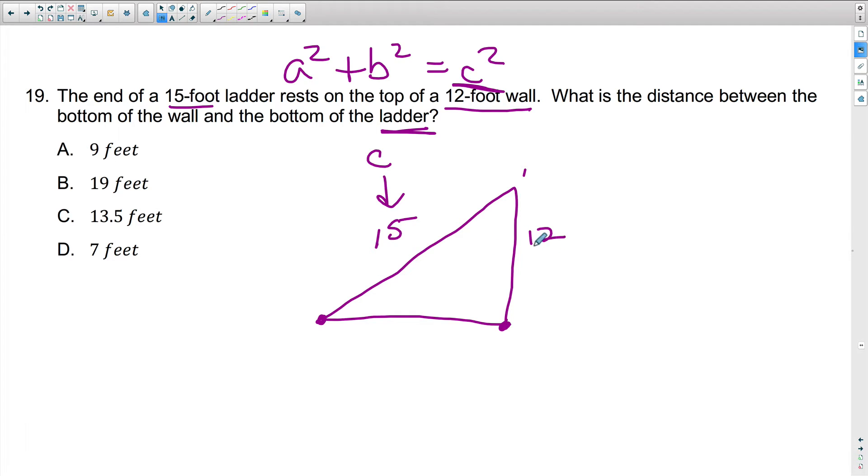So here we have 12, 15, and we don't know the distance here. This is going to be our variable or our unknown. Let's go ahead and make that a, and let's make 12 our b. So if I'm going to put that in terms of the Pythagorean theorem, I'm going to have a squared, which I don't know, plus 12 squared equals 15 squared.